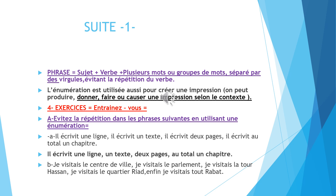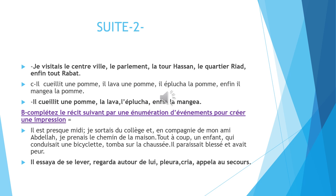Phrase B: Je visitais le centre de ville. Je visitais le parlement. Je visitais la tour Hassan. Je visitais le quartier Riyad. Enfin, je visitais tout Rabat. La réponse: Je visitais le centre de ville, le parlement, la tour Hassan, le quartier Riyad, enfin, tout Rabat.